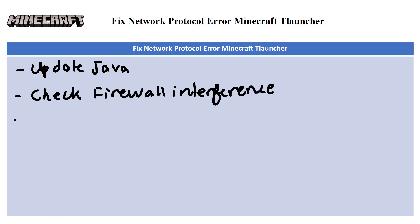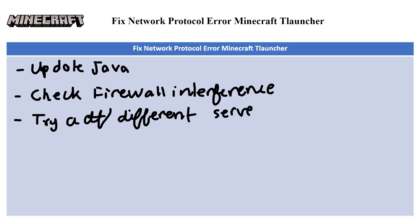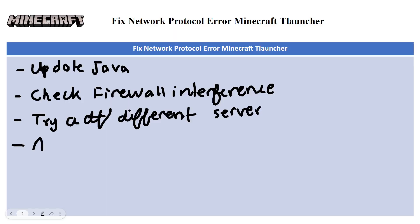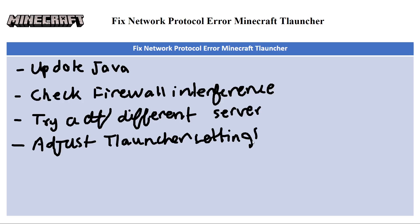The next fix is Try a Different Server. If you're unable to connect to a specific server, try connecting to a different one to see if the issue is specific to that server. The next fix is Adjust TLauncher Settings — experiment with different connection settings in TLauncher such as Proxy Settings or Server Selections.